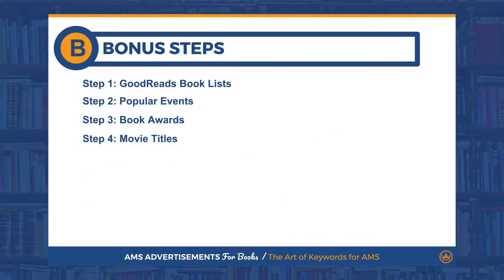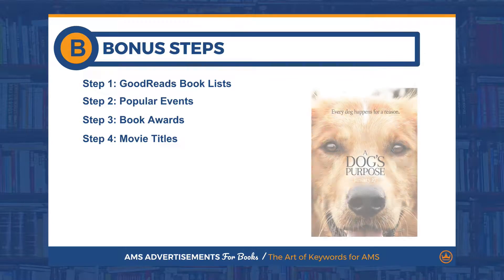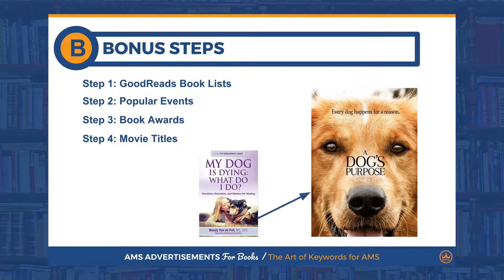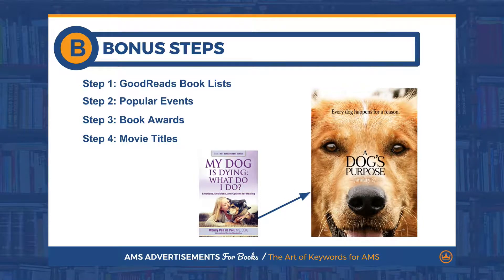Bonus step number four: look for any popular movies in your genre, especially new and upcoming ones. When A Dog's Purpose came out, Wendy Vanderpool, a self-published author who writes on dog loss and grief, used the movie title as an AMS keyword. Because of this outside-the-box thinking and the popularity of the term with little competition, Wendy experienced a very profitable campaign.